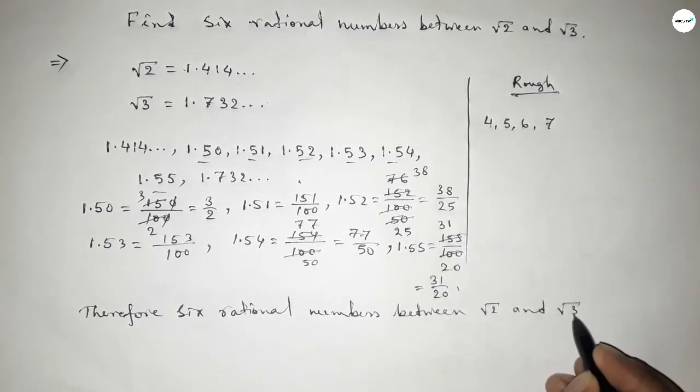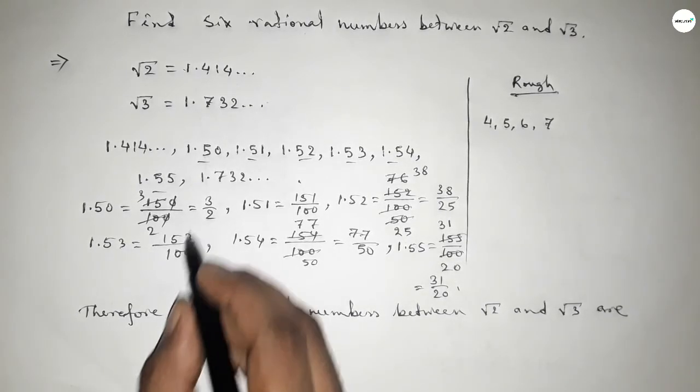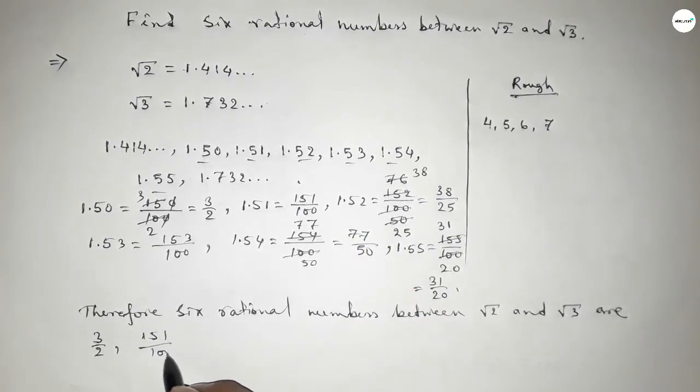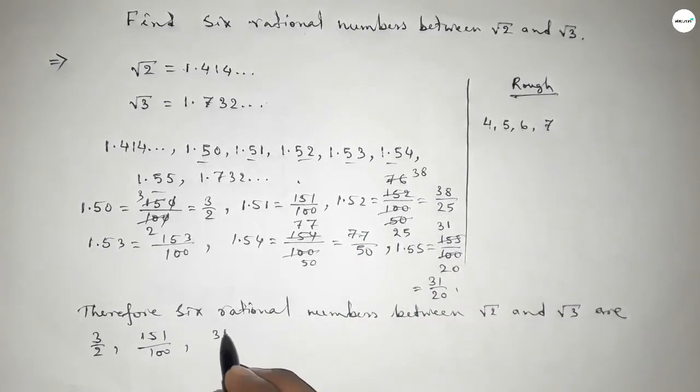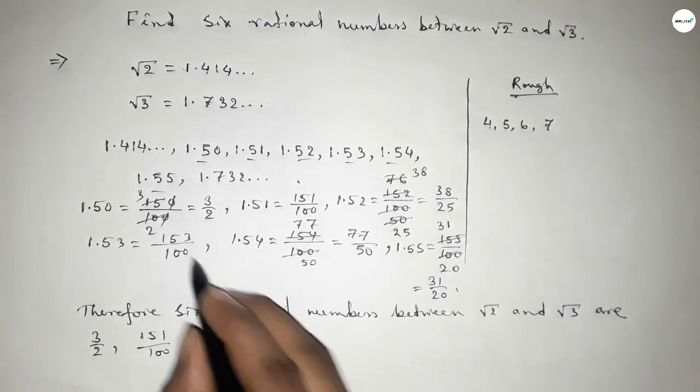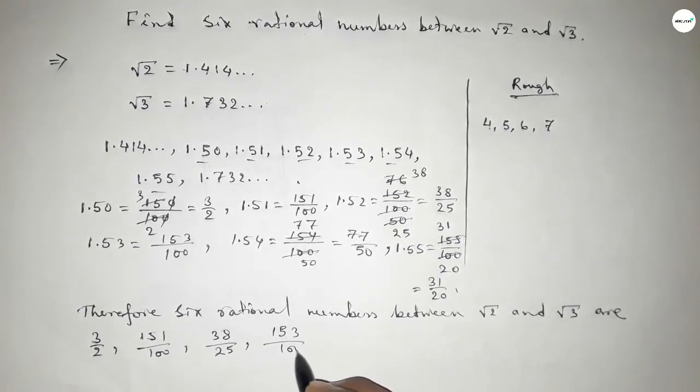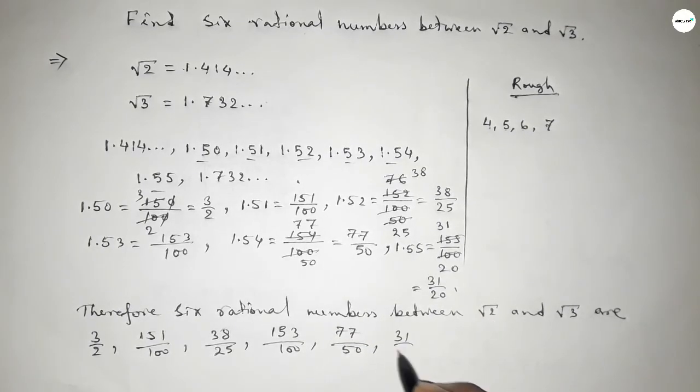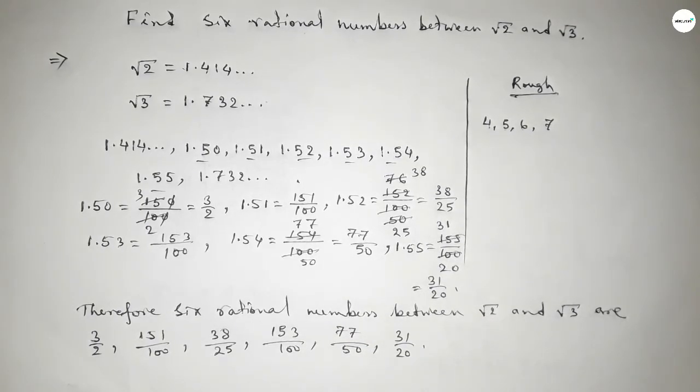Therefore, six rational numbers between root 2 and root 3 are: first one is 3 over 2, second one 151 over 100, third is 38 over 25, then 153 over 100, next 77 over 50, and last one 31 over 20. This is the process to find six rational numbers between root 2 and root 3.